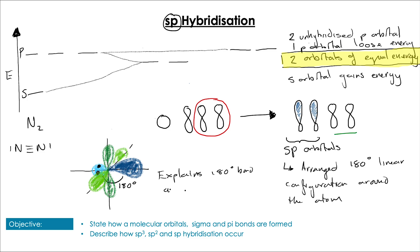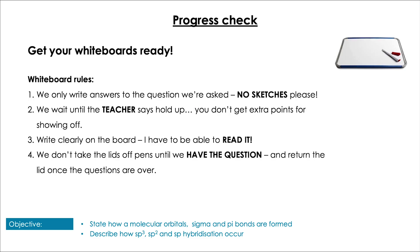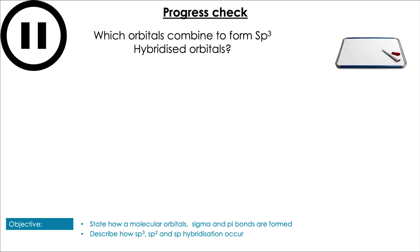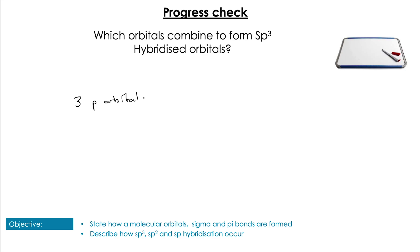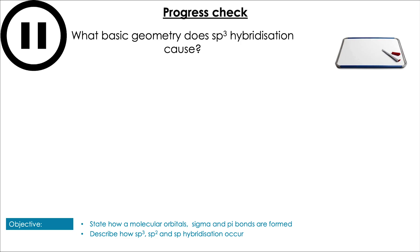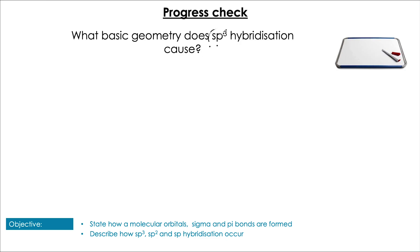Now let's try some questions. First question: which orbitals combine to form sp3 hybridized orbitals? The clue is in the name — three p orbitals (px, py, and pz) and one s orbital combine. Next question: what basic geometry would we expect from sp3 hybridization? Four equal-energy orbitals will of course produce a basic geometry of tetrahedral.